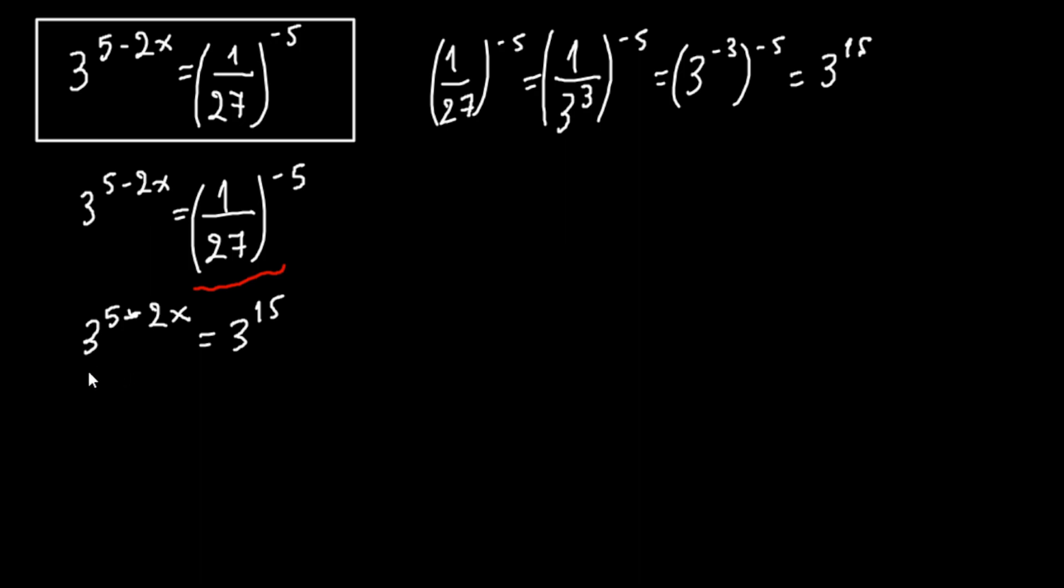Here we have the same base in the equation, so we have 5 minus 2x equals 15, or minus 2x equals 15 minus 5, minus 2x equals 10.